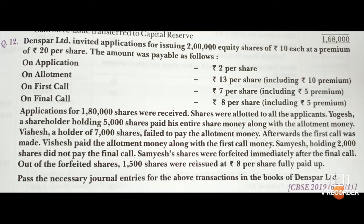Vishesh, a holder of 7,000 shares, failed to pay the allotment money. Afterwards, the first call was made. Vishesh paid the allotment money along with the first call money. Shamesh, holding 2,000 shares, did not pay the final call. Shamesh's shares were forfeited immediately after the final call. Out of the forfeited shares, 1,500 shares were reissued at Rs.8 per share fully paid up, meaning the shares were reissued at a discount of Rs.2.